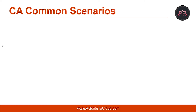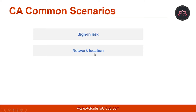Let us discuss some of the common access concerns that conditional access can help you with. The first one is sign-in risk. Azure AD Identity Protection detects sign-in risk. How do you restrict access if a detected sign-in risk indicates a bad actor? What if you would like to get stronger evidence that a sign-in was performed by the legitimate user? And what if your doubts are strong enough to even block specific users from accessing an app? Another scenario is Network Location. Azure AD is accessible from anywhere, so what if an access attempt is performed from a network location that is not under the control of your IT department?